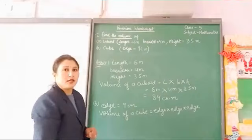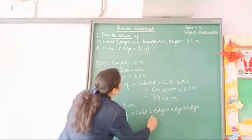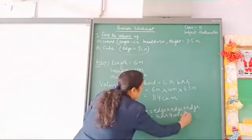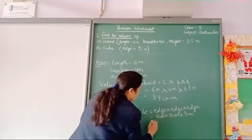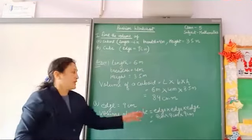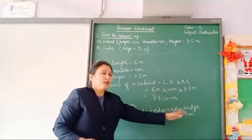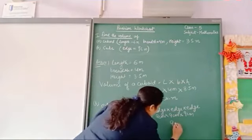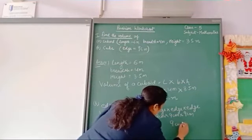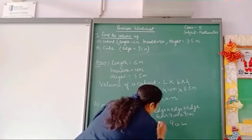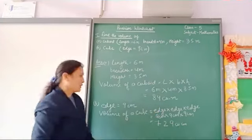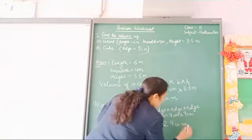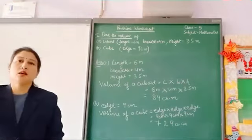For part B, the volume of a cube is edge × edge × edge. So it is 9 cm × 9 cm × 9 cm. 9 × 9 = 81, and 81 × 9 gives us the answer in cubic centimeters. So the answer is 729 cubic centimeters. This is how we solve question number 1.